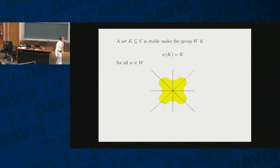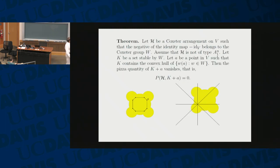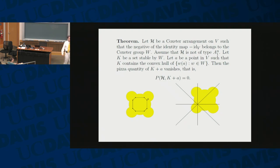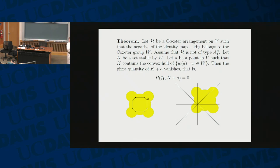I want to do more interesting things. A set is convex on the action of the group if it doesn't change. Here's the theorem: I take a Coxeter arrangement with the condition that the negative of the identity map should be in the Coxeter group, and I do not want to have the coordinate hyperplanes — I do not want A1 to the N. Then if you pick a point A and look at the action of the group on A in that convex hull, if that's inside the pizza, then the pizza quantity of this shifted pizza K plus A is equal to zero. So, you can share pizza in higher dimensions.